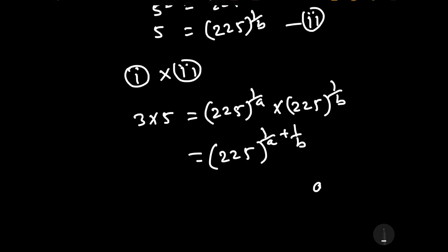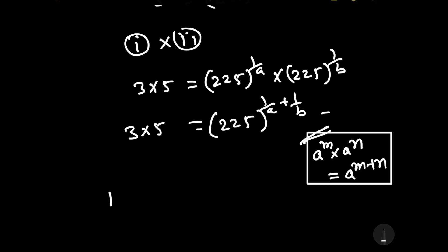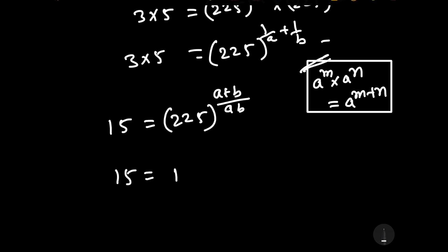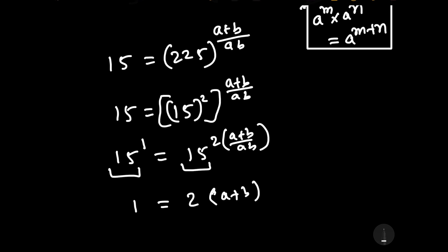Since the base is the same, using the property a to the power m times a to the power n equals a to the power m plus n, we add the exponents. So 15 equals 225 to the power 1 by A plus 1 by B, which equals 225 to the power A plus B upon AB. Since 225 equals 15 squared, we write 15 equals 15 squared to the power A plus B upon AB, giving 15 to the power 1 equals 15 to the power 2 times A plus B upon AB. Comparing exponents: 1 equals 2 times A plus B upon AB.